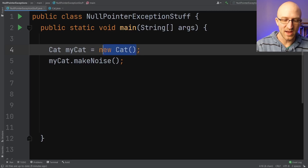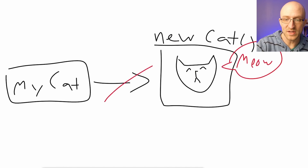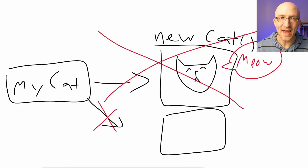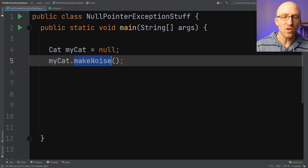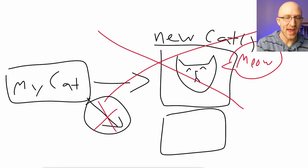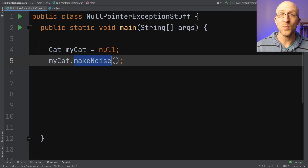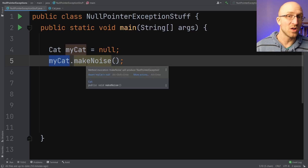But what happens if instead we set it to null? Well, instead of myCat pointing to an actual cat object in memory, it's instead null, which essentially means it's pointing at nothing — not even like some empty box with no cat in it. It's pointing to nothing at all. This is a null pointer. So when we call the makeNoise method on our myCat variable that has been set to null, there's no cat to make noise. We have a myCat variable, but it's not pointing to any actual cat object. All we have is a null pointer, and so we get a null pointer exception. Most of the time when we get a null pointer exception, this is the reason: we have some variable that's been set to null and we try to call some method on it.